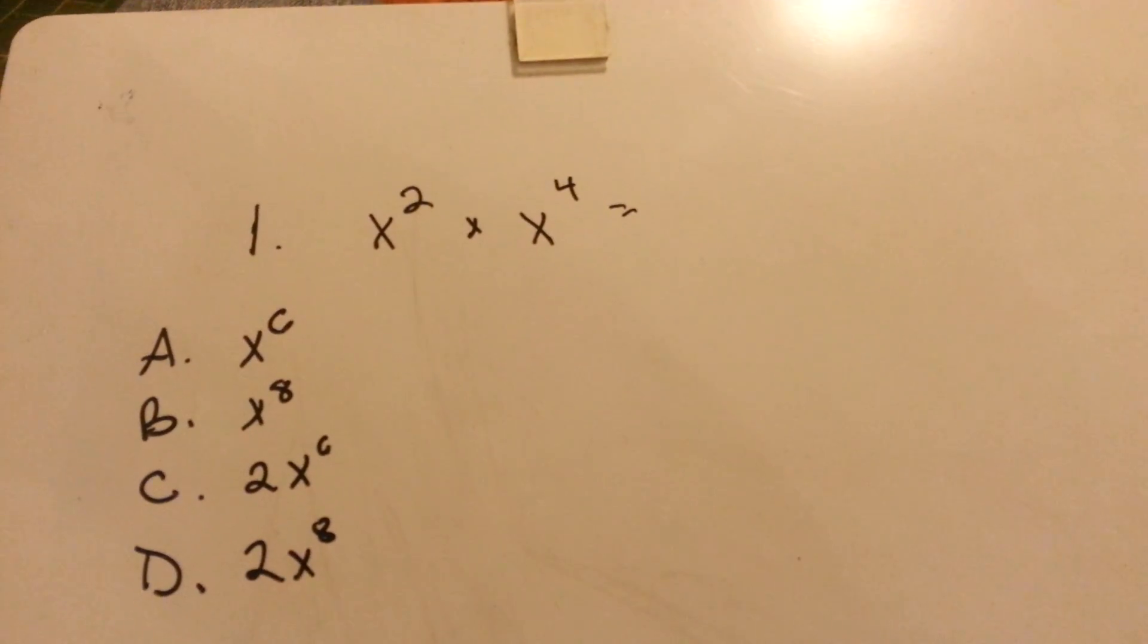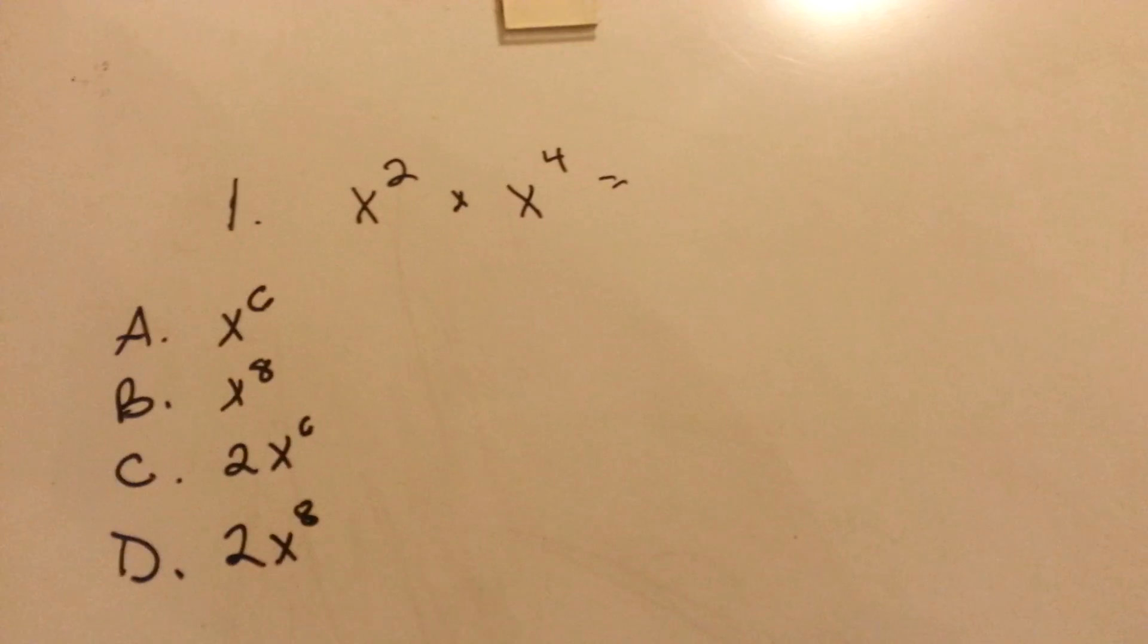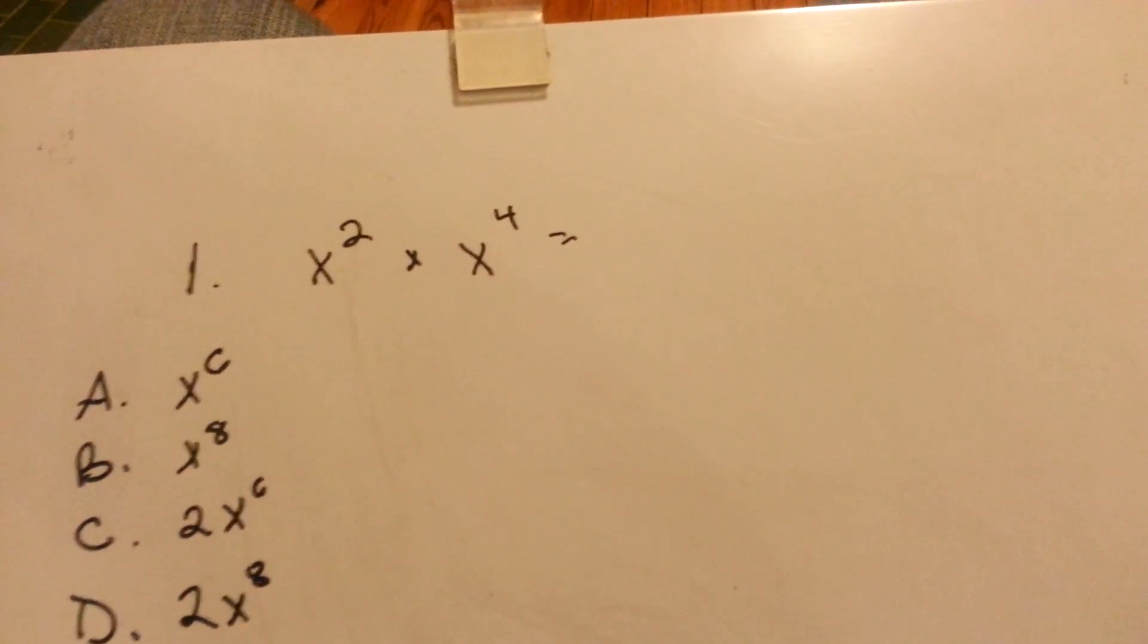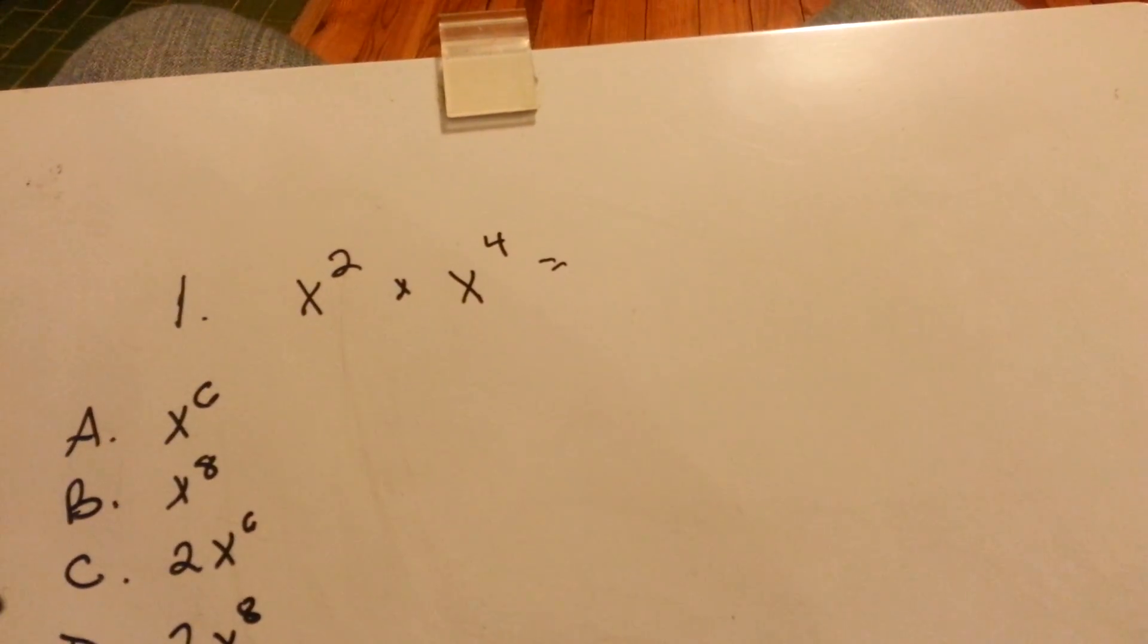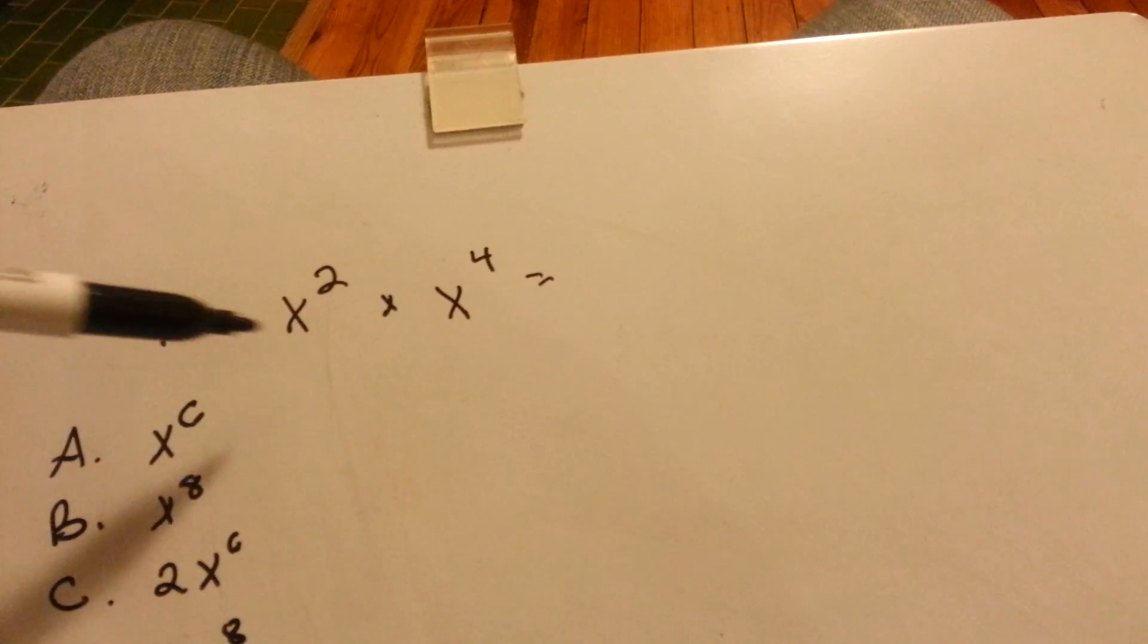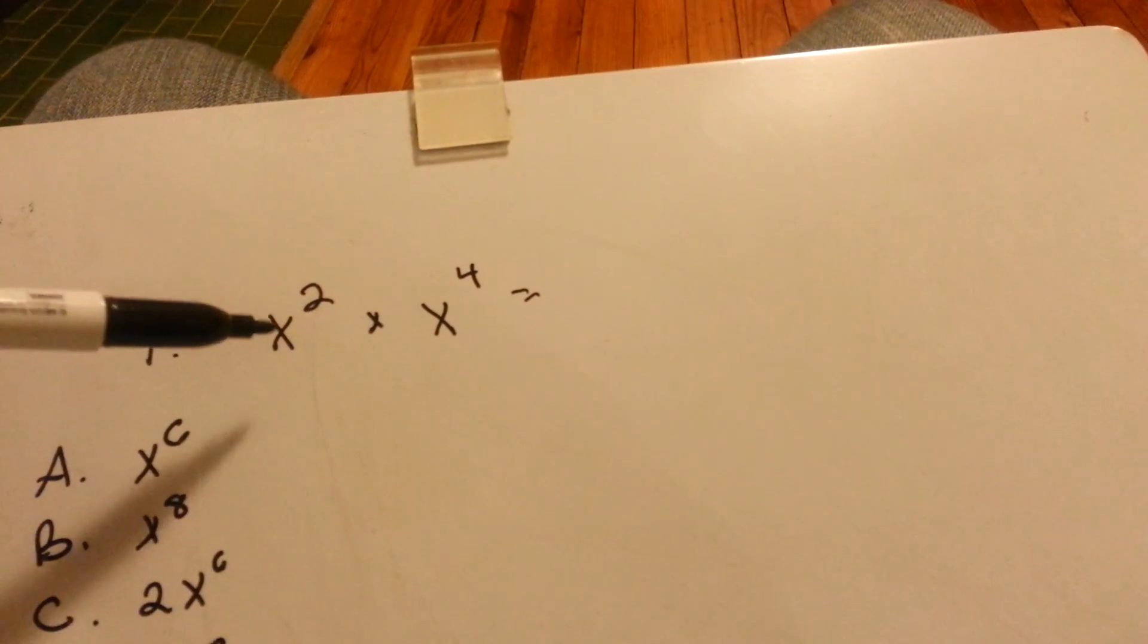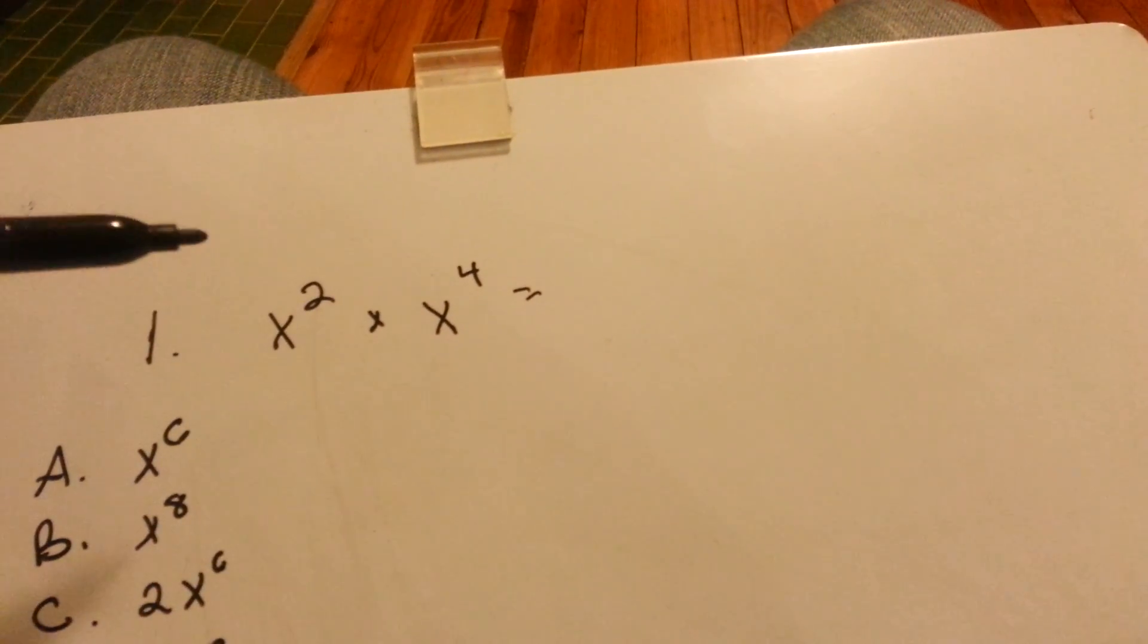This problem is x squared times x to the fourth equals what? So the simplest thing is to know that when you are multiplying variables or bases with the same base, like these are x and x.